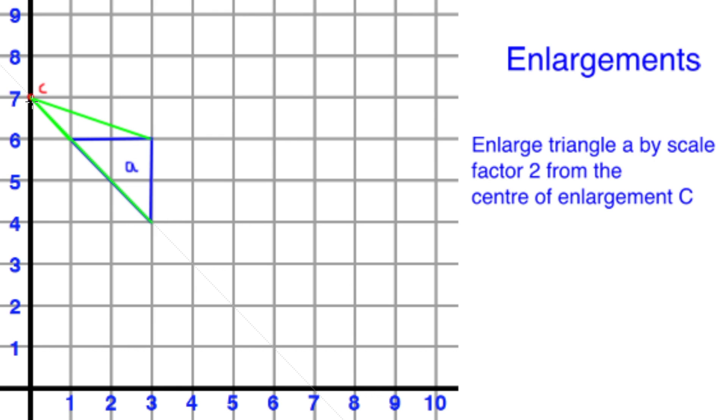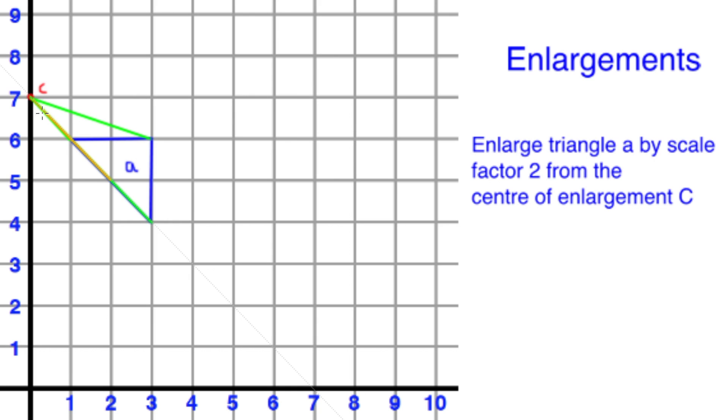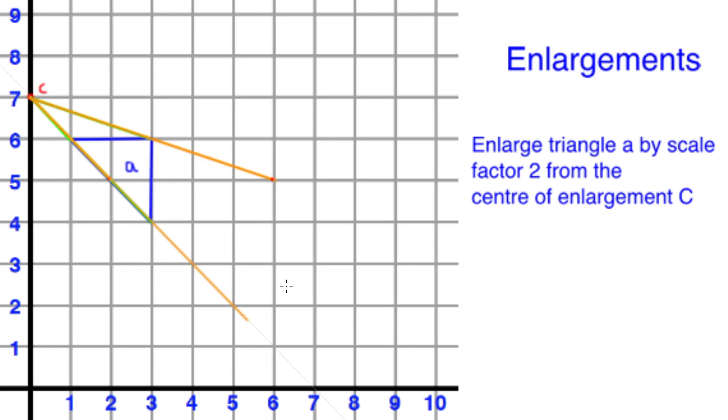In this case, a scale factor 2, which we should understand now, is 2 times as large, which also makes it 2 times the distance from the centre of enlargement. So if we go over our original lines from the centre, we double their lengths to define the points of our enlarged shape.